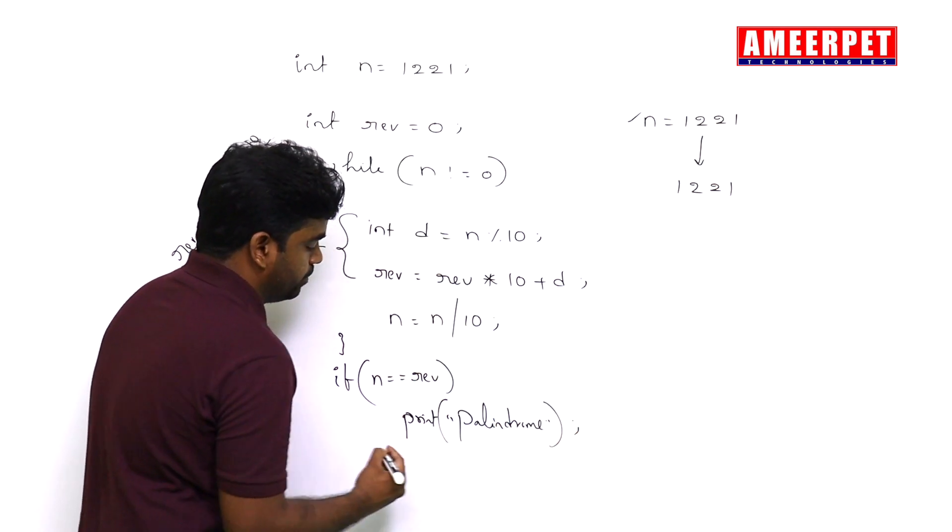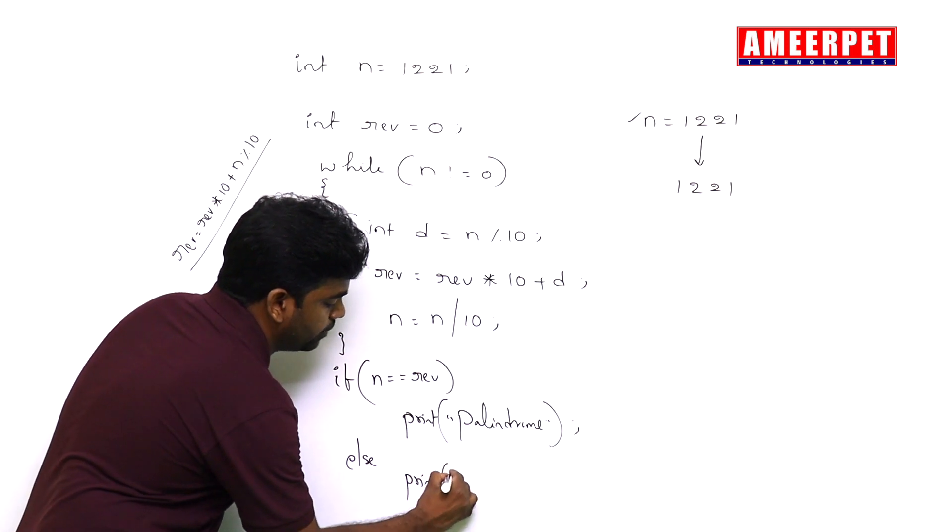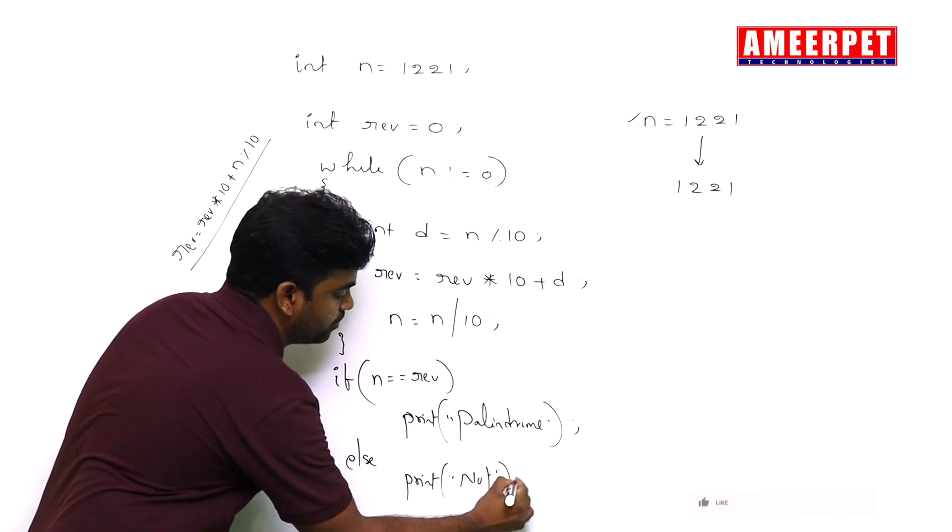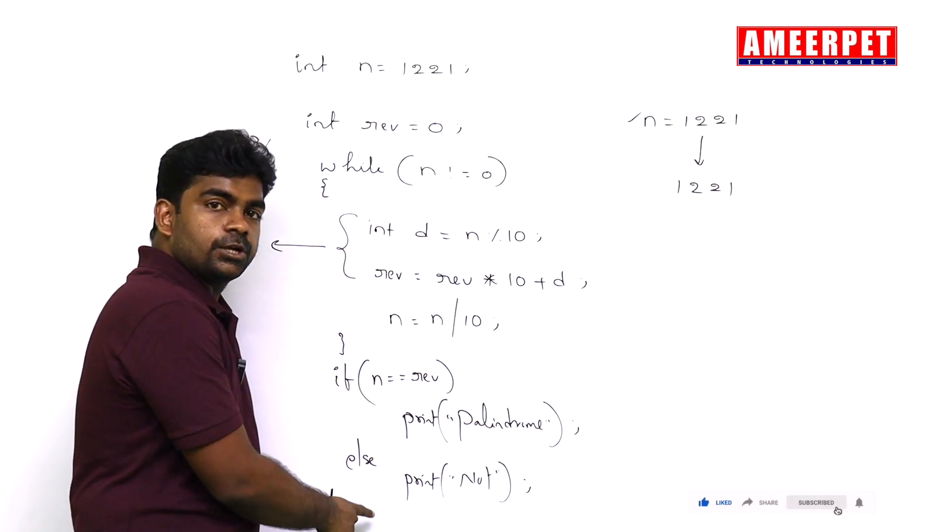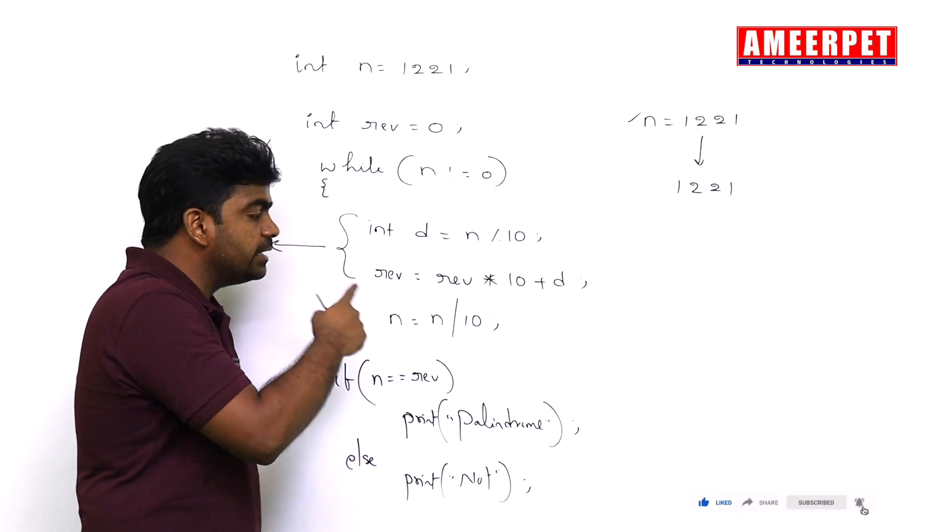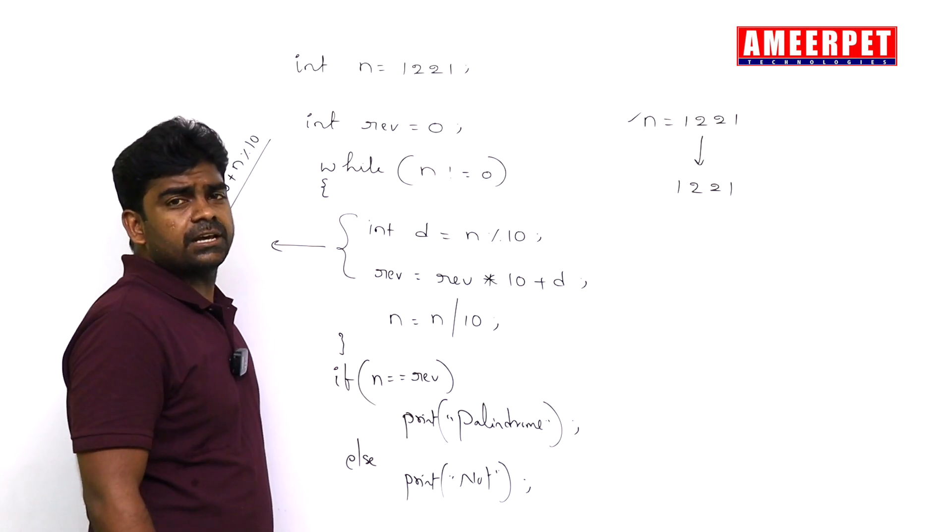If not, else it is not a palindrome number. Clearly, we need to explain 'is a palindrome' and 'it's not palindrome' like that.